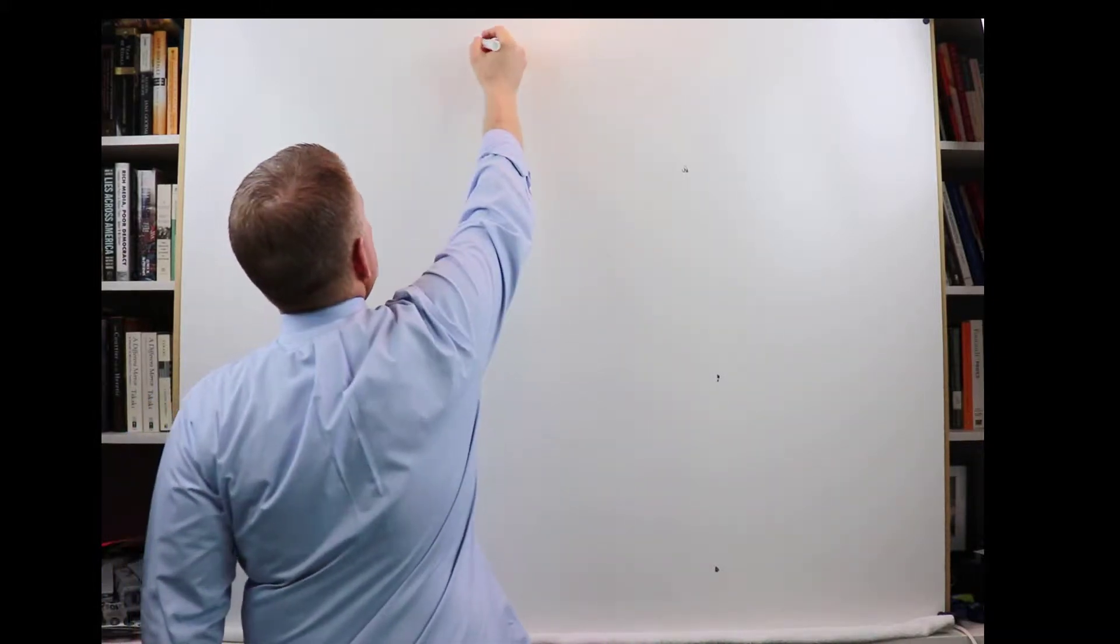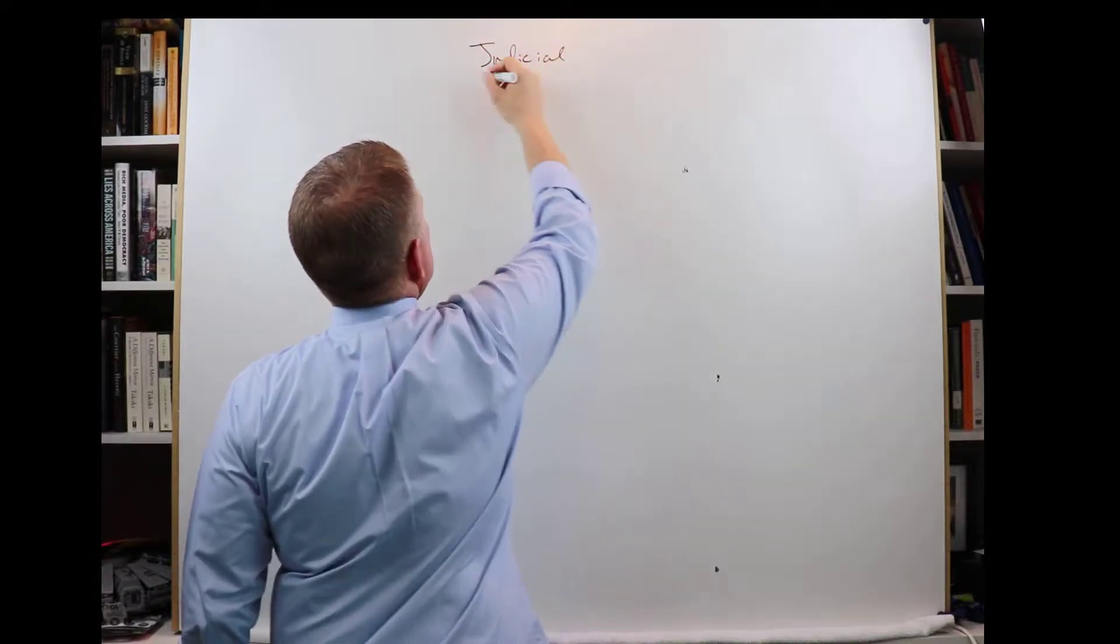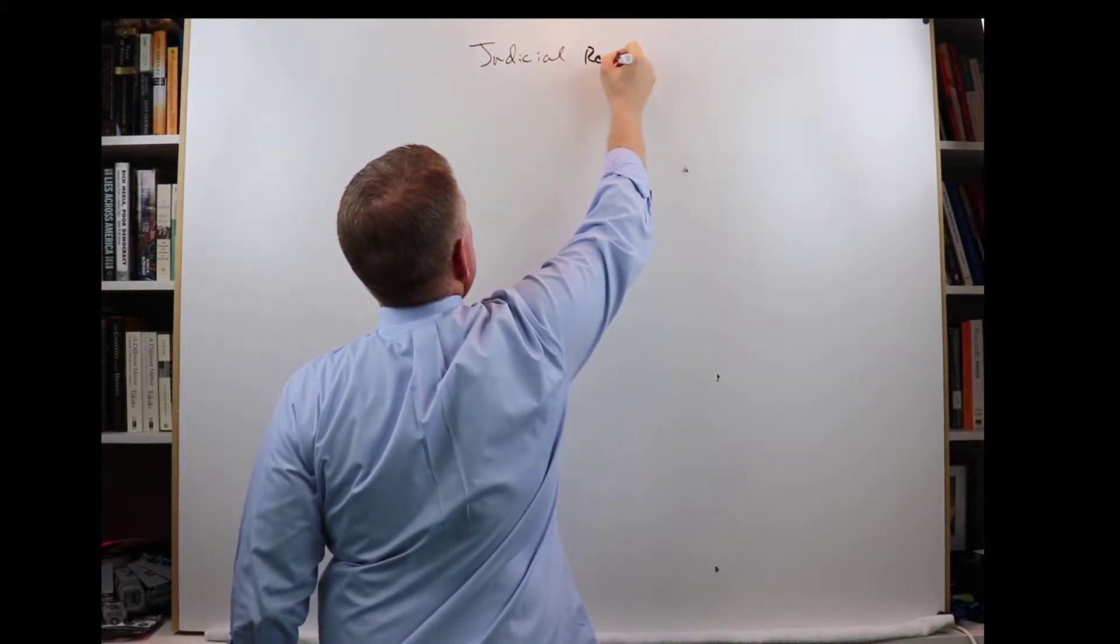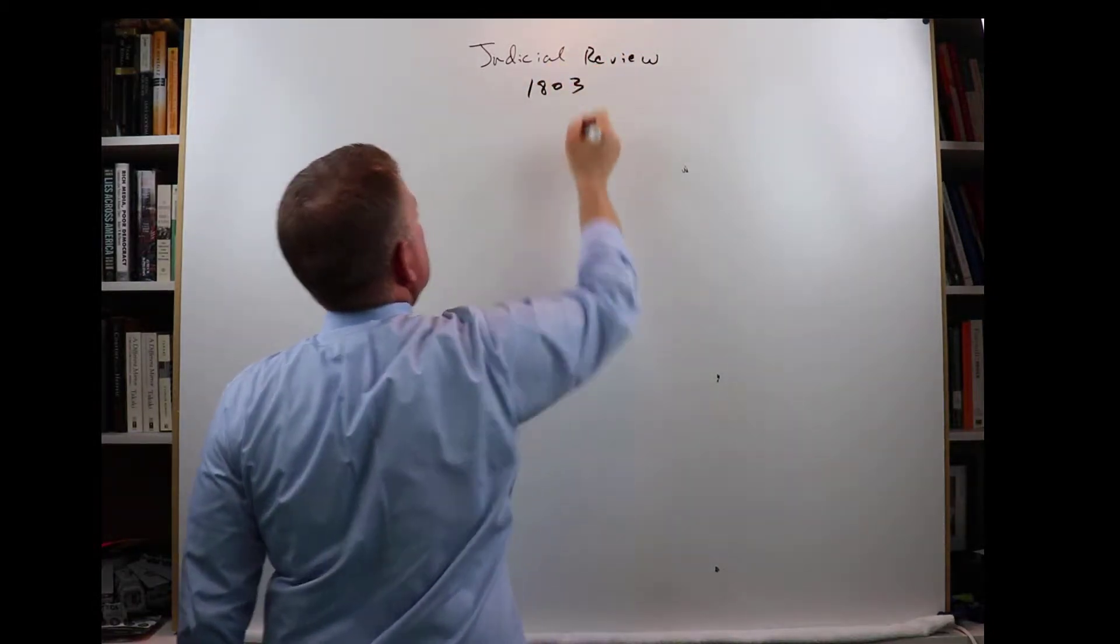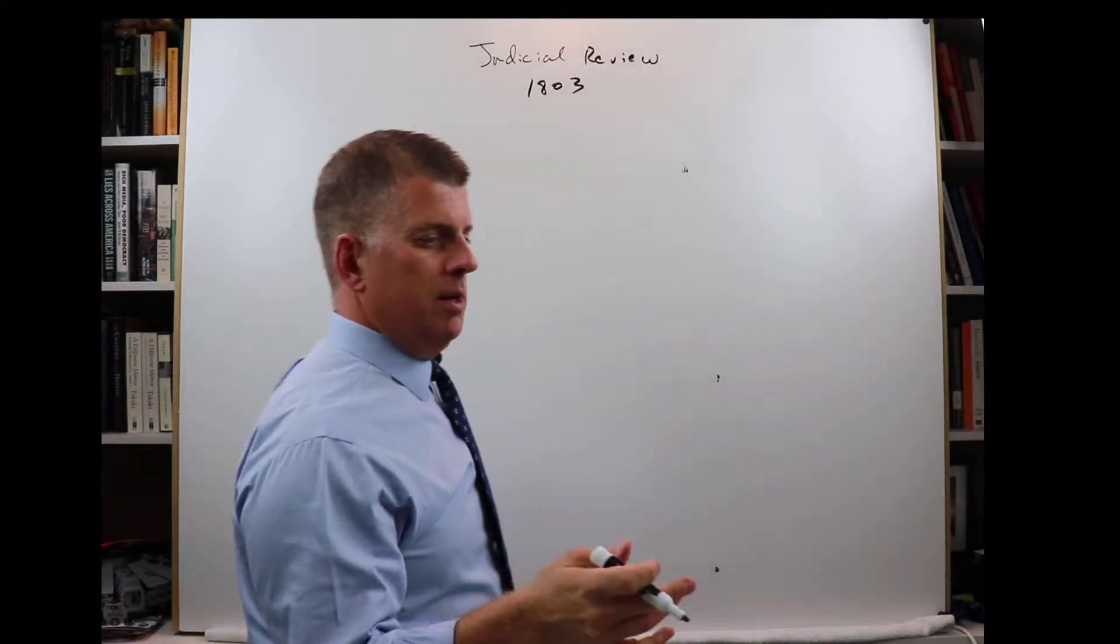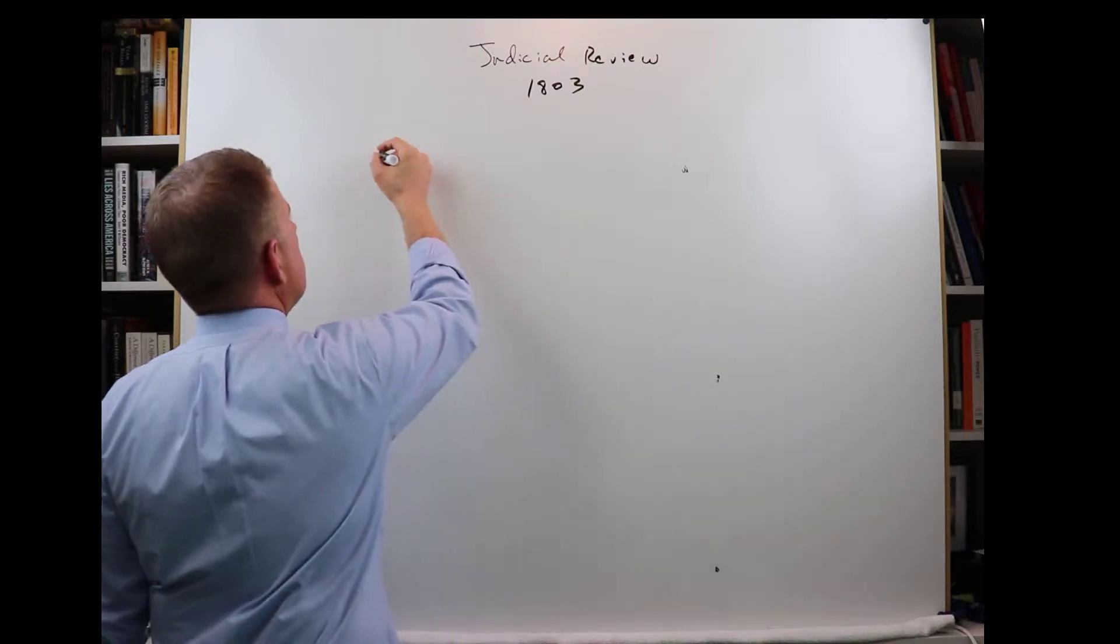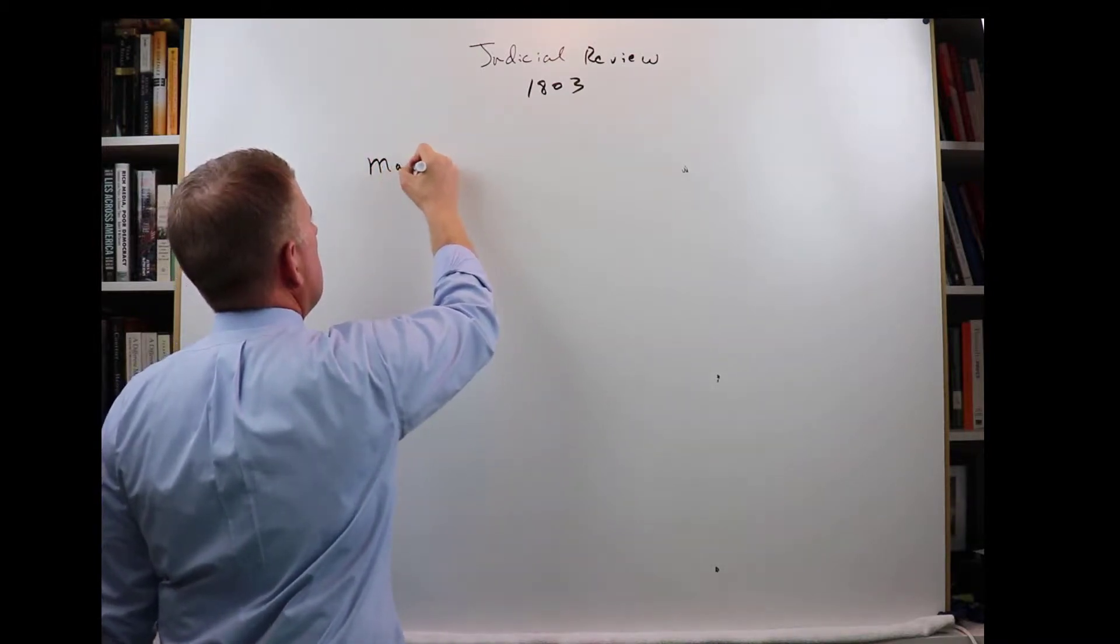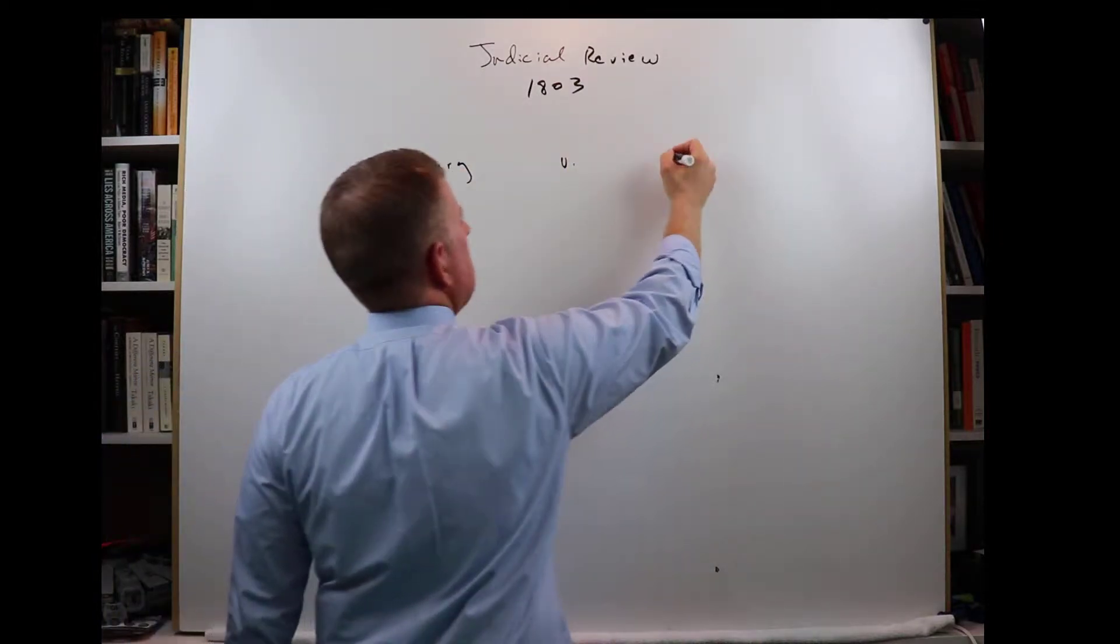So we're talking about judicial review. We're talking about 1803, a long time ago. And it's a court case, maybe you've heard it. It's Marbury vs. Madison.